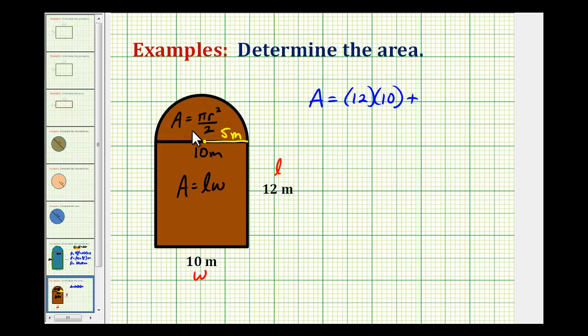Plus the area of this half circle, which will be pi times the radius squared, which will be five meters squared, all divided by two, because we have half of a circle.